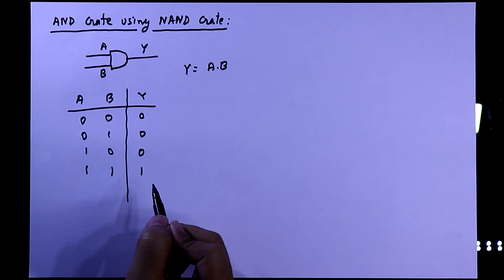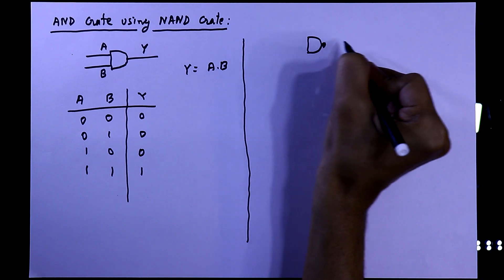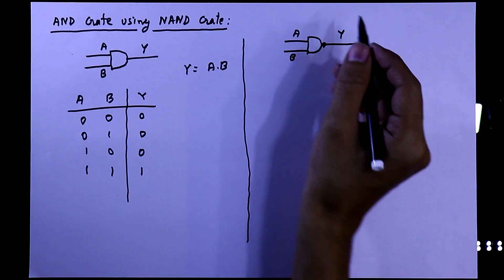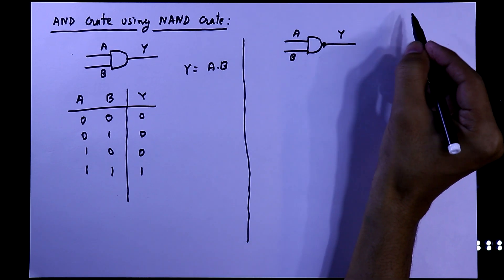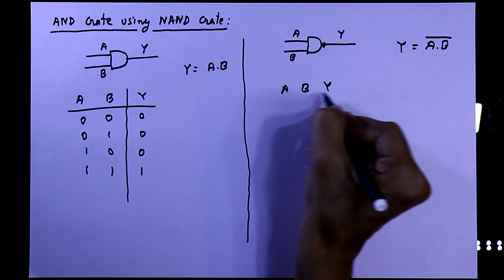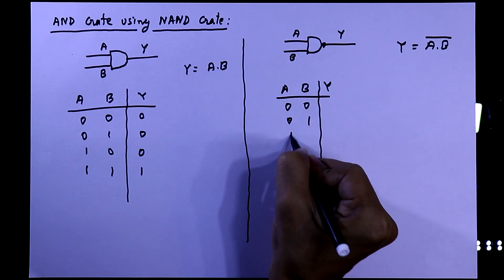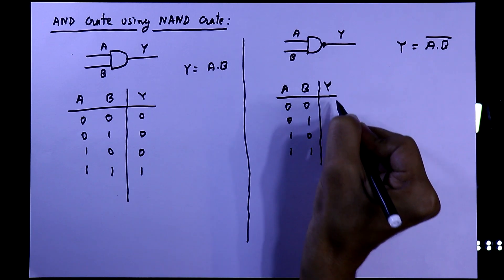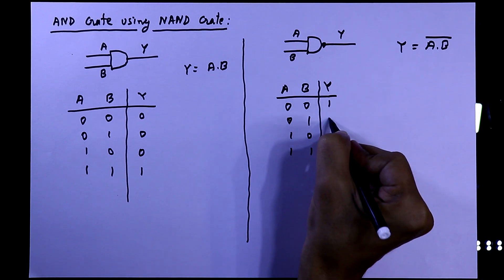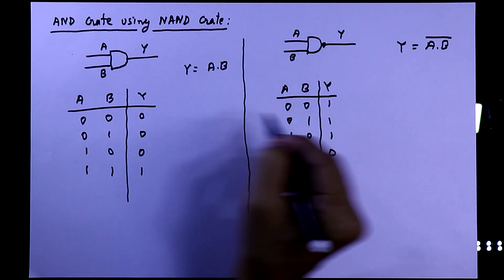So this is the truth table of AND gate. Now we have to get this truth table using NAND gate. This is the symbol of NAND gate — A and B are the inputs and Y is the output. The mathematical expression of NAND gate is Y = (A · B)̄. It has two inputs so the possibilities are 0 0, 0 1, 1 0, and 1 1, and the output will be 1, 1, 1, 0 — which is just the opposite of AND gate.